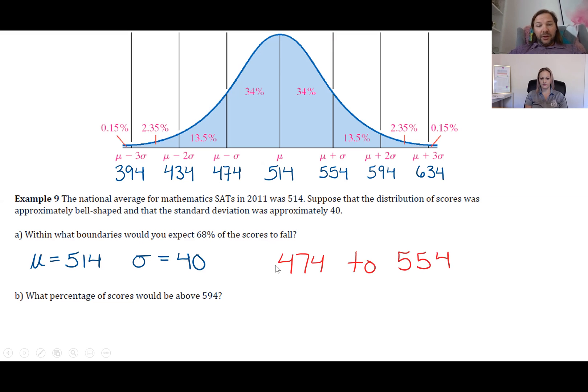That's the range where 68% of the scores fall. The next question asks what percentage of scores would be above 594. Well, 594 is two standard deviations away from the mean, so we're trying to calculate the area of this little slice—what percentage of scores are above 594. Because this data is bell-shaped, it's easier to figure out how much data is...